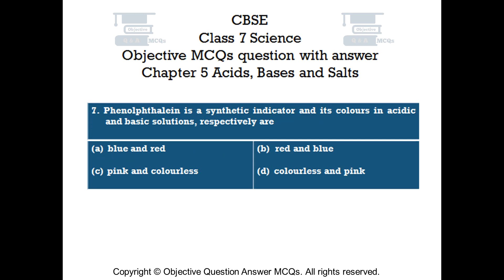Question number 7. Phenolphthalein is a synthetic indicator. Its colors in acidic and basic solutions respectively are: Option A, blue and red. Option B, red and blue. Option C, pink and colorless. Option D, colorless and pink.